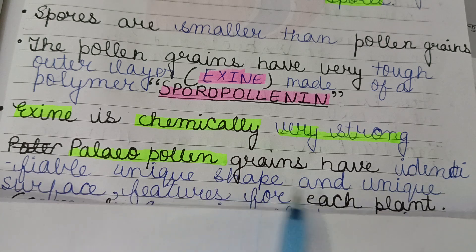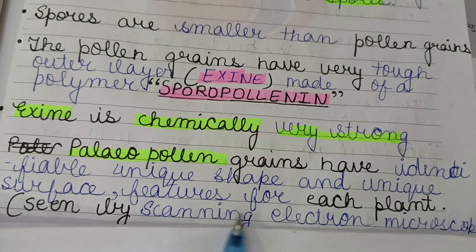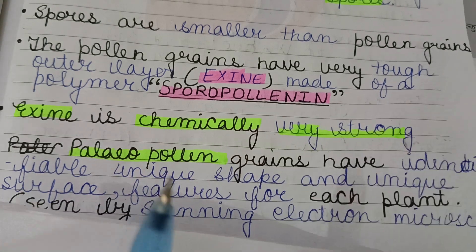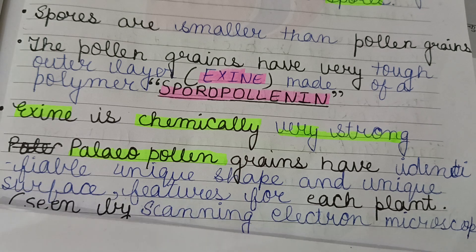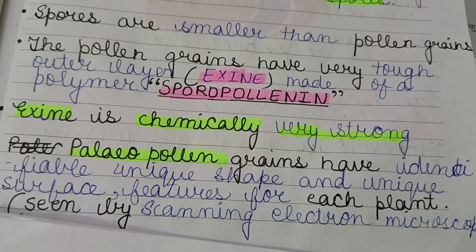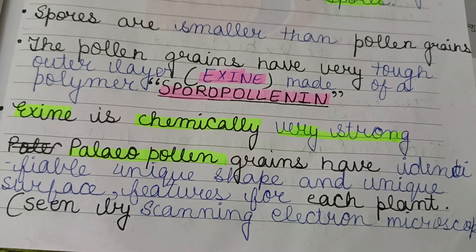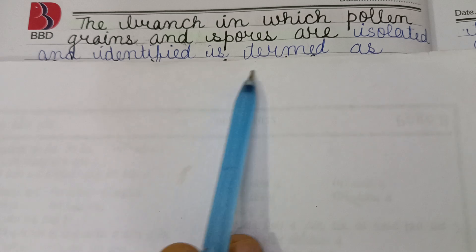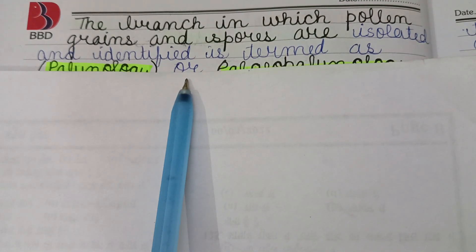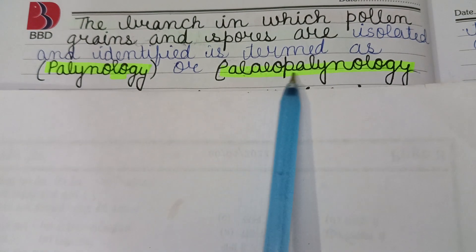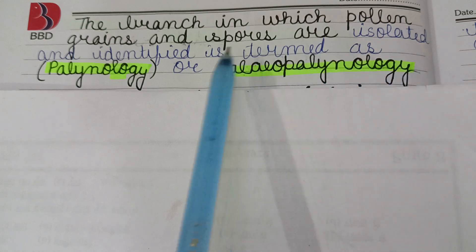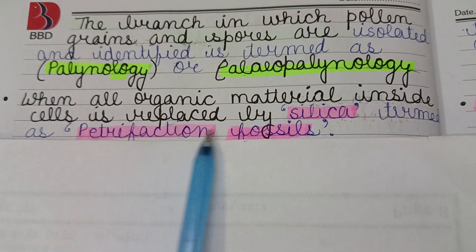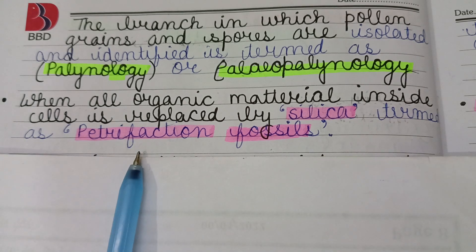Exine is chemically very strong. Ancient pollen grains have identifiable unique shapes and unique surface features for each plant, visible by scanning electron microscope. Different plants have different pollen grains. The branch in which pollen grains and spores are isolated and identified is termed as palynology. When all organic material inside cells is replaced by silica, those fossils are termed petrification fossils.